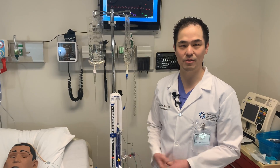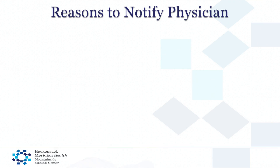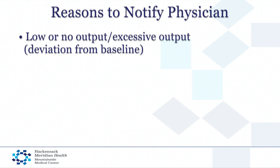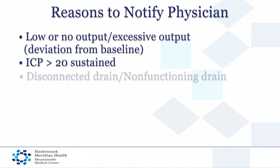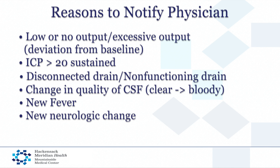There will be an order that clarifies the situations where you should notify a physician. These include low or extremely high output from the drain that differs from any prior value, ICPs sustained and elevated above 20 centimeters of water for greater than 20 minutes, a drain that is disconnected or non-functioning, a change in the quality of the cerebrospinal fluid — for instance going from clear to bloody — a new fever in a patient, or any neurologic change that you encounter.